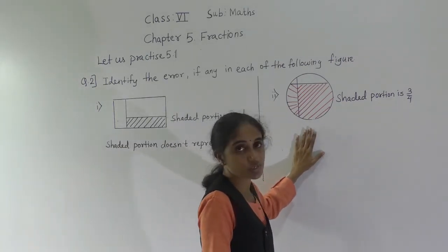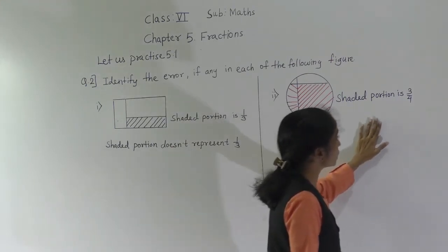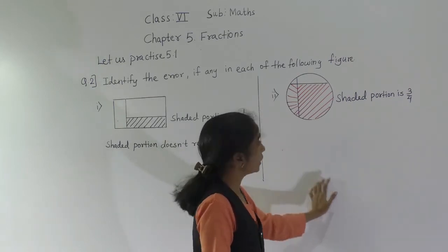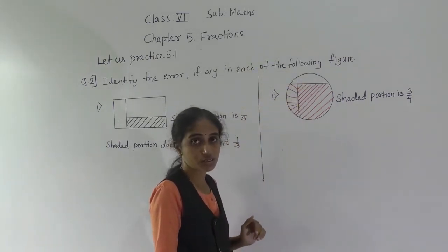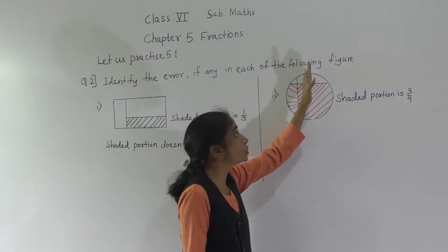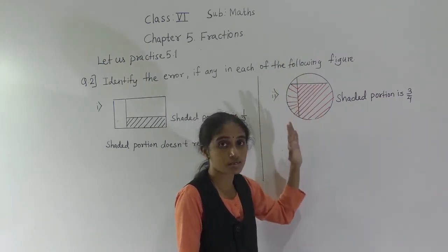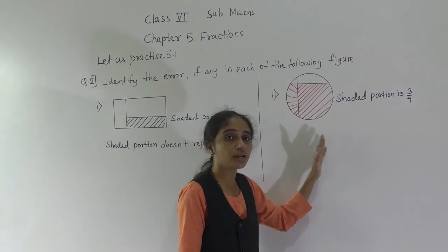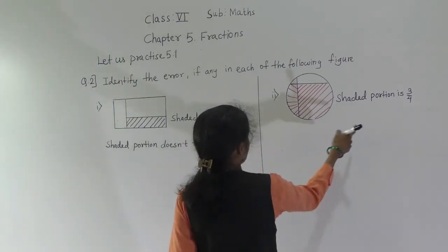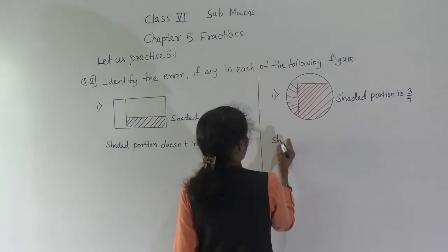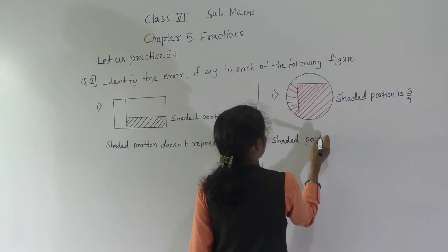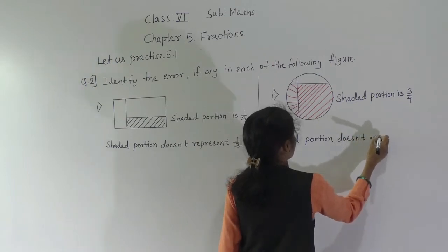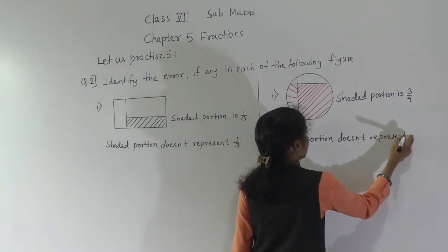Now see the second figure. It says the shaded portion is three fourths. We should divide this figure into 4 equal parts, and from those 4 equal parts, 3 parts should be shaded properly — then only that figure represents three fourths. So, the shaded portion doesn't represent three fourths.